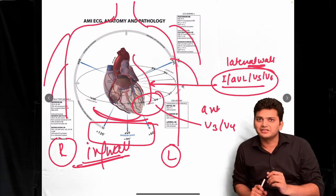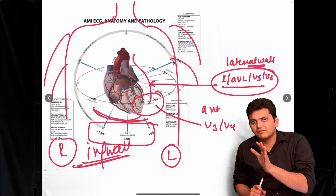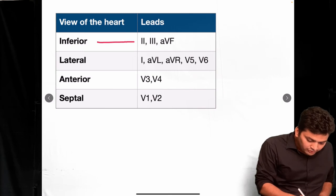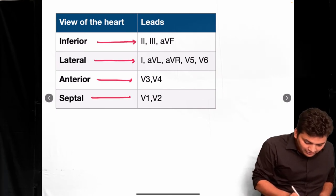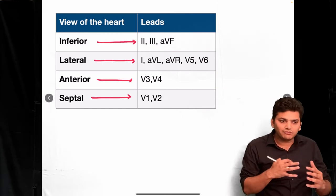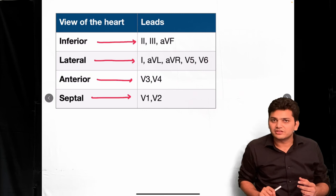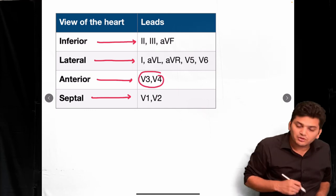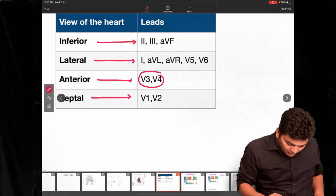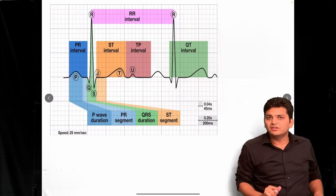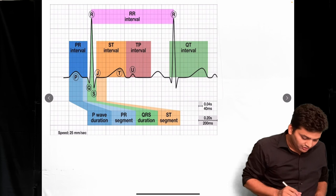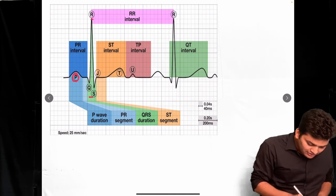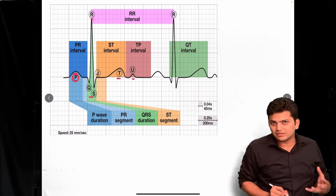So the ECG leads work in groups called contiguous leads: II, III, aVF are contiguous for the inferior wall; V3, V4 for the anterior wall; I, aVL, V5, V6 for the lateral wall. When ischemia occurs — such as a lateral wall MI or inferior wall MI — you will see the changes in these corresponding groups of leads. The normal ECG waveform has a P wave as the first positive deflection, followed by the QRS complex, the T wave, and lastly the U wave.